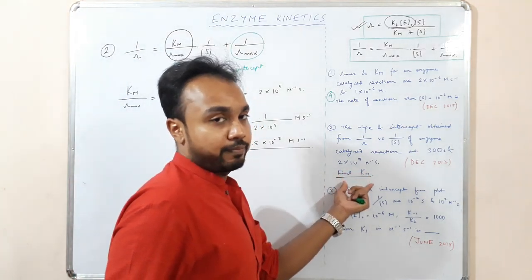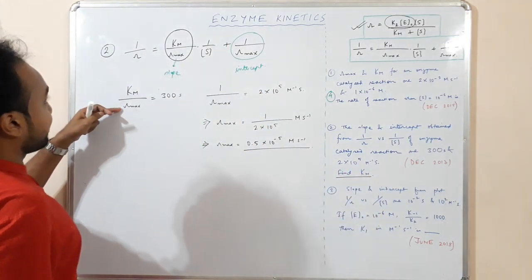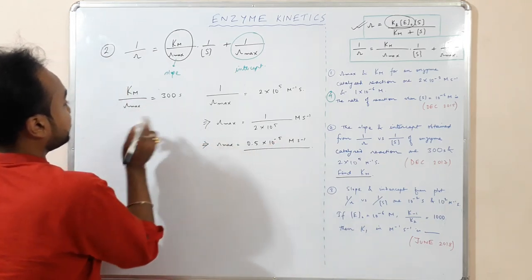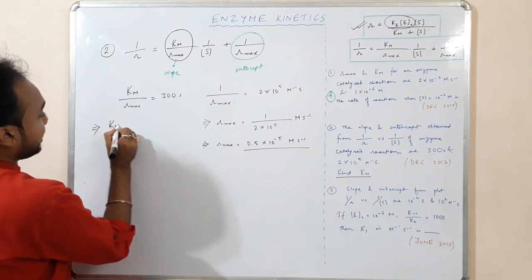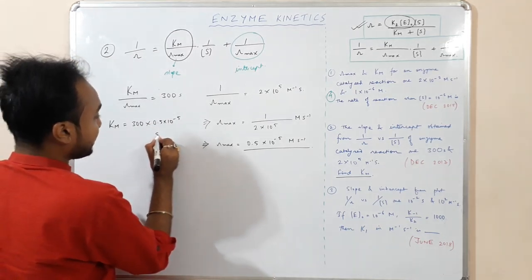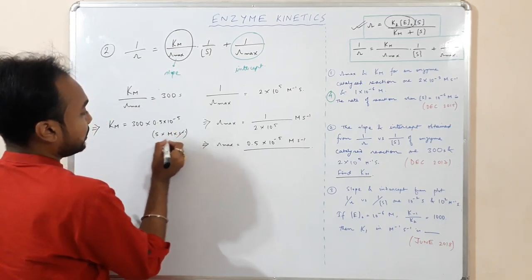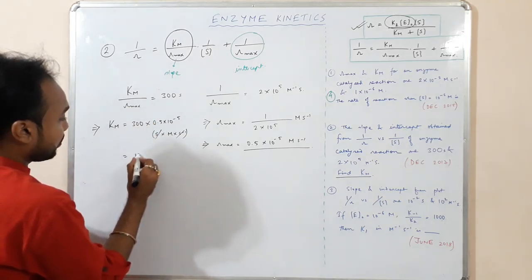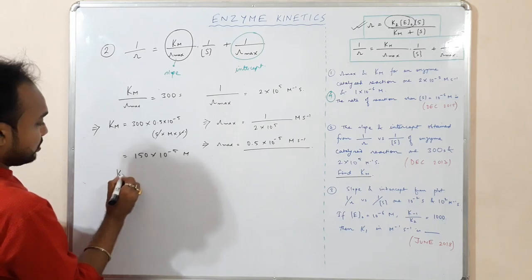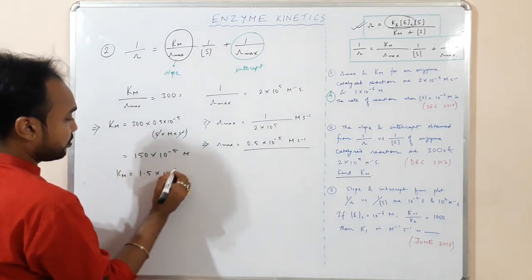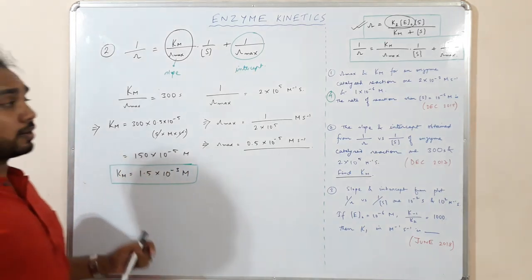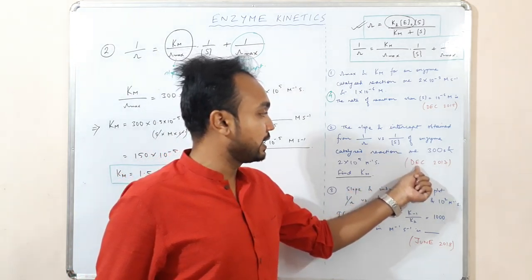Now we calculate Km. Since Km/Rmax = 300, Km = 300 × Rmax = 300 × 0.5×10⁻⁵ = 150×10⁻⁵ = 1.5×10⁻³ mol. This numerical was asked in CSIR NET December 2017 as a 4-mark question.